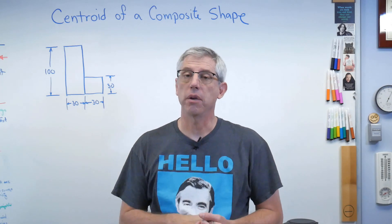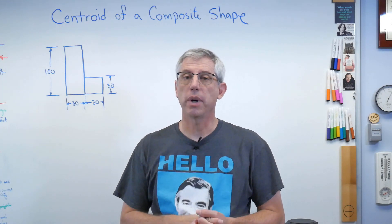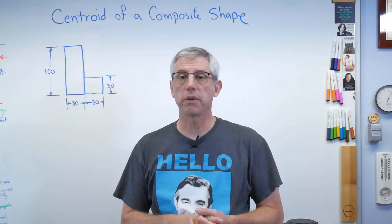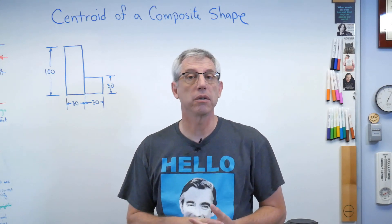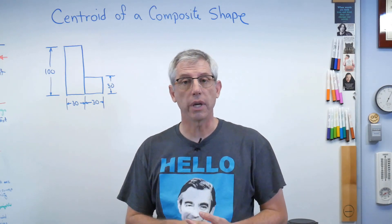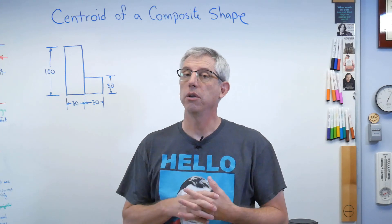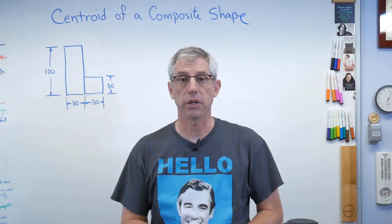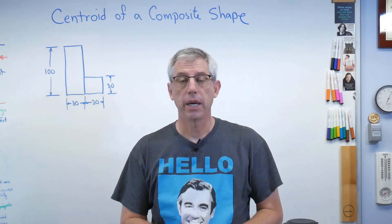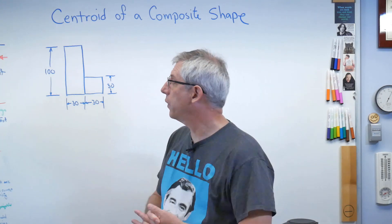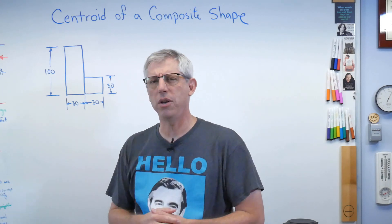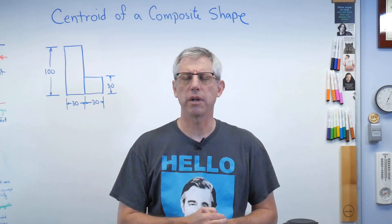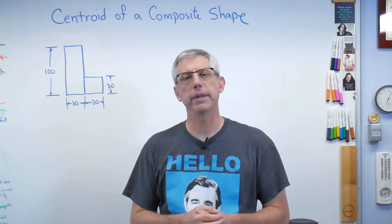We're going to add up the effect of those two boxes and find the location of the vertical centroid using a very simple procedure. So first thing to know — why would I want to know the centroid of that shape?